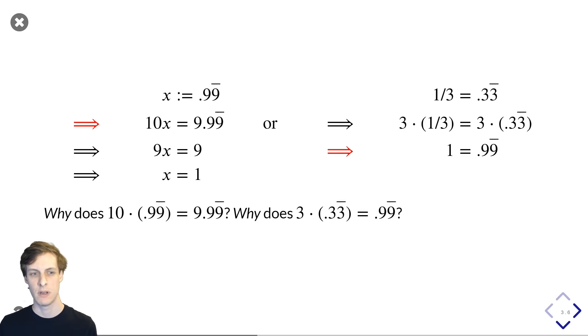Look at the first step on the left. I multiply 0.99 repeating by 10, and I end up with 9.99 repeating. Now, for ordinary finite decimal expansion numbers, we know that multiplying by 10 is the same as just moving the decimal point one to the right. But how do we know that that holds for repeated decimals?